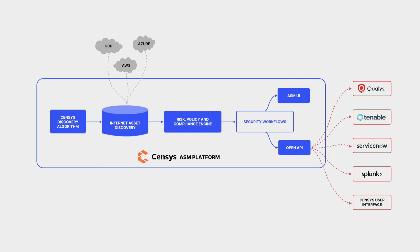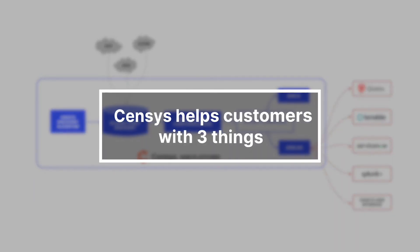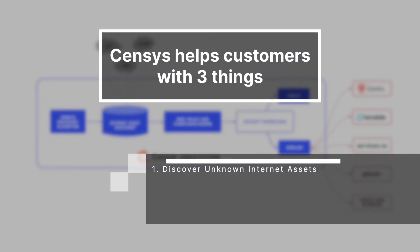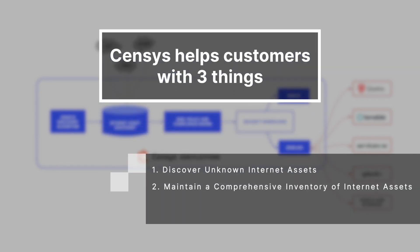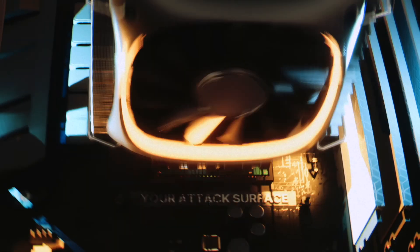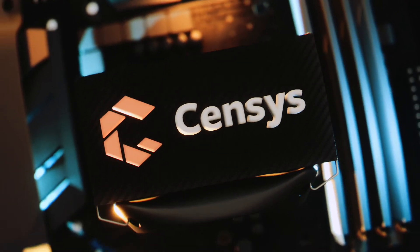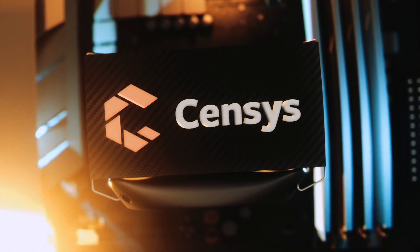Every unknown is a risk to your organization and may compromise your compliance. To reiterate, the three things Census can help you accomplish: discovery of unknown internet assets, maintaining a comprehensive inventory of internet assets, and identifying and remediating internet risks. Schedule a demo to learn more about your attack surface.